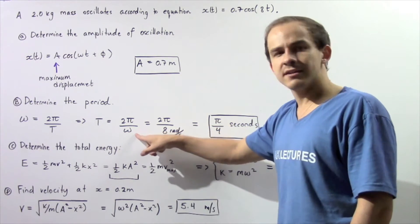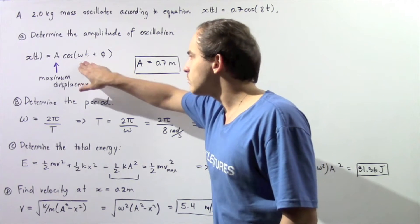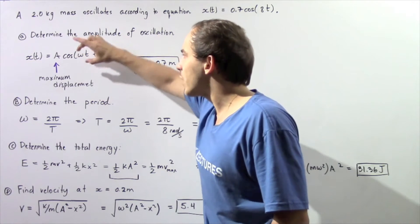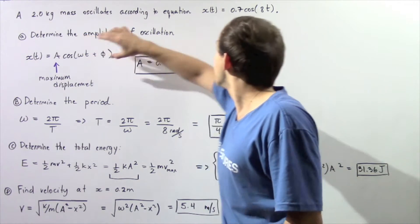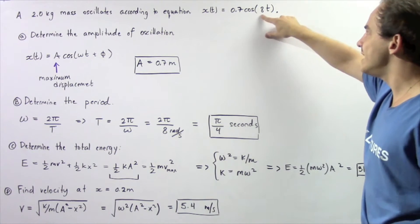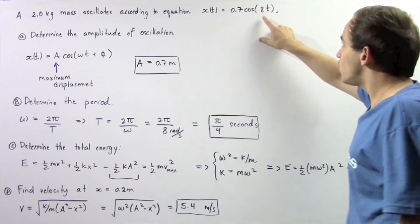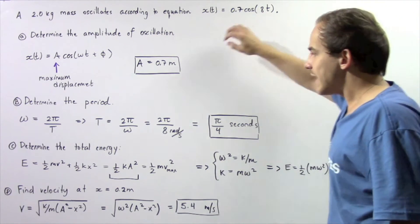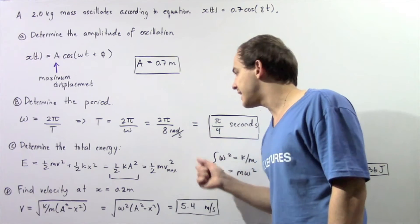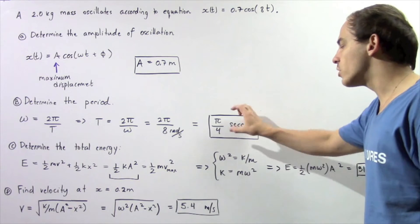Now what exactly is our ω? Going back to part A and the general formula, ω is simply the value right next to our t term. Looking at the given equation, our ω is simply 8. Note our φ is 0. So we use this ω and get 2π divided by 8 radians per second, giving us a period of π/4 seconds.